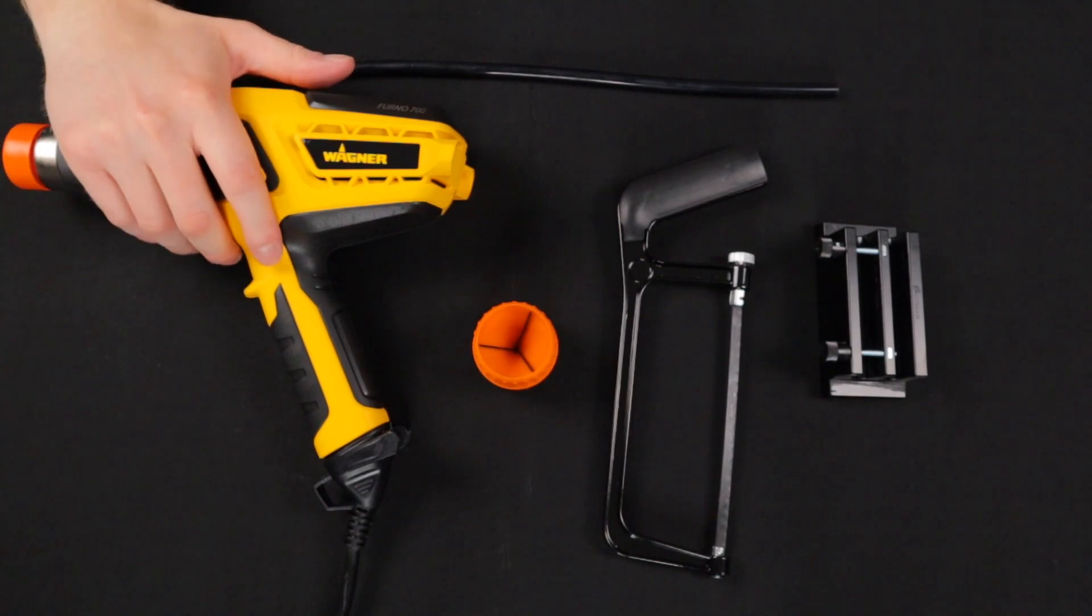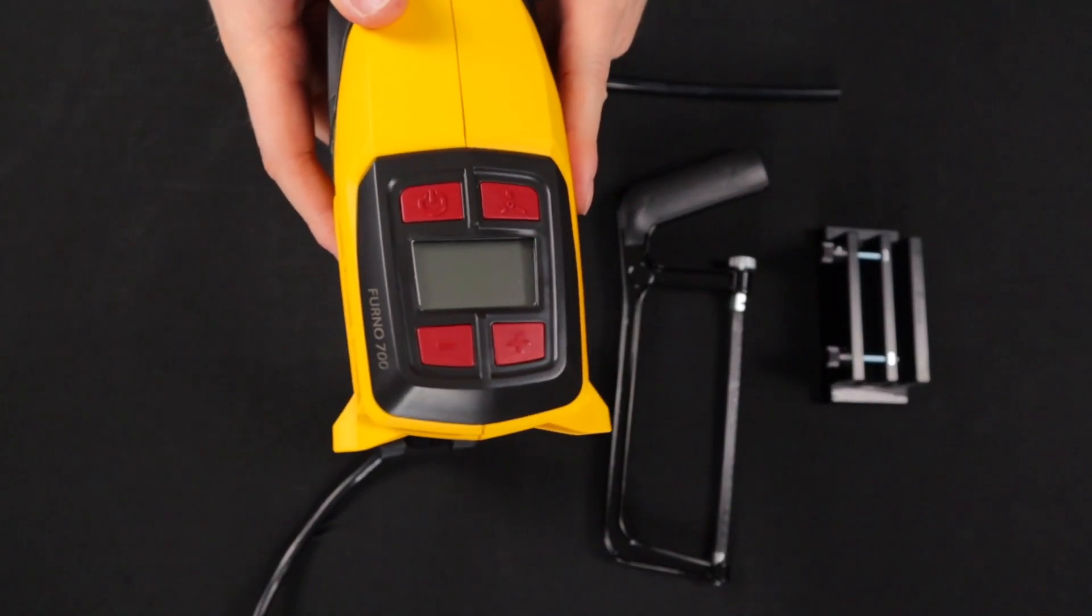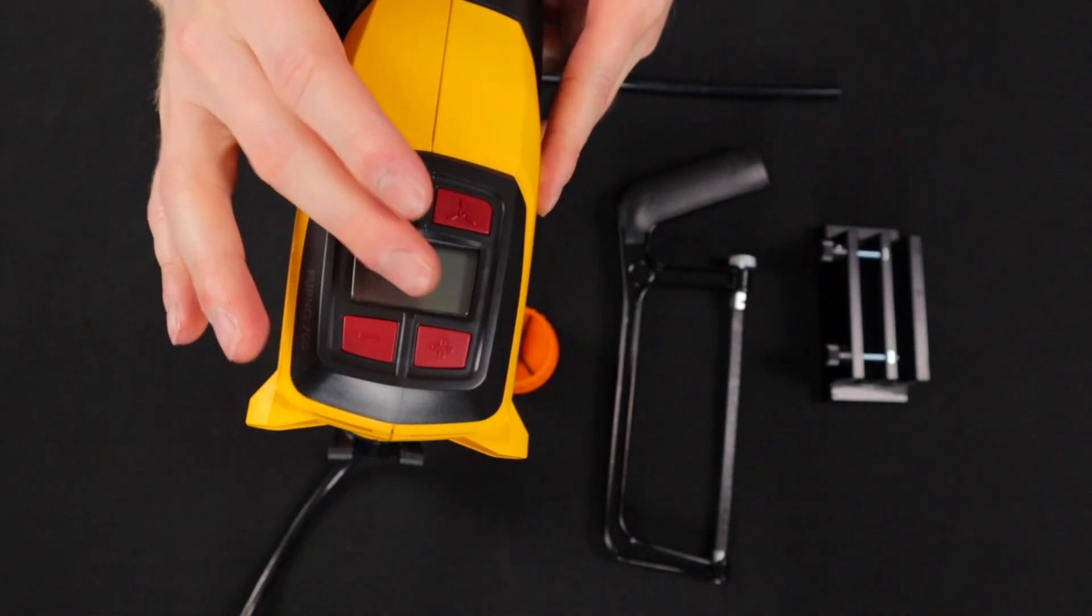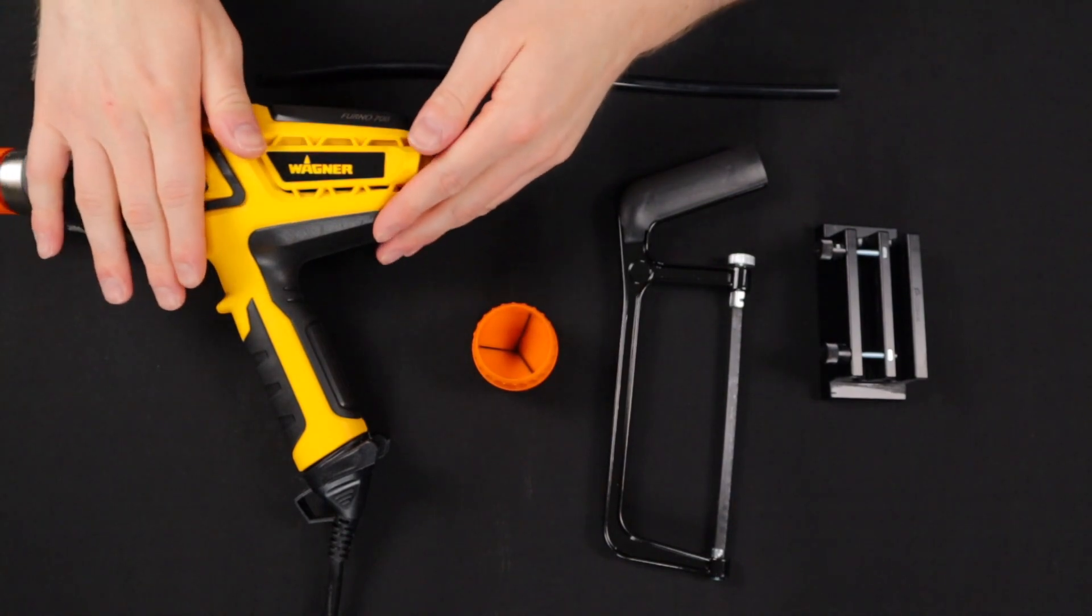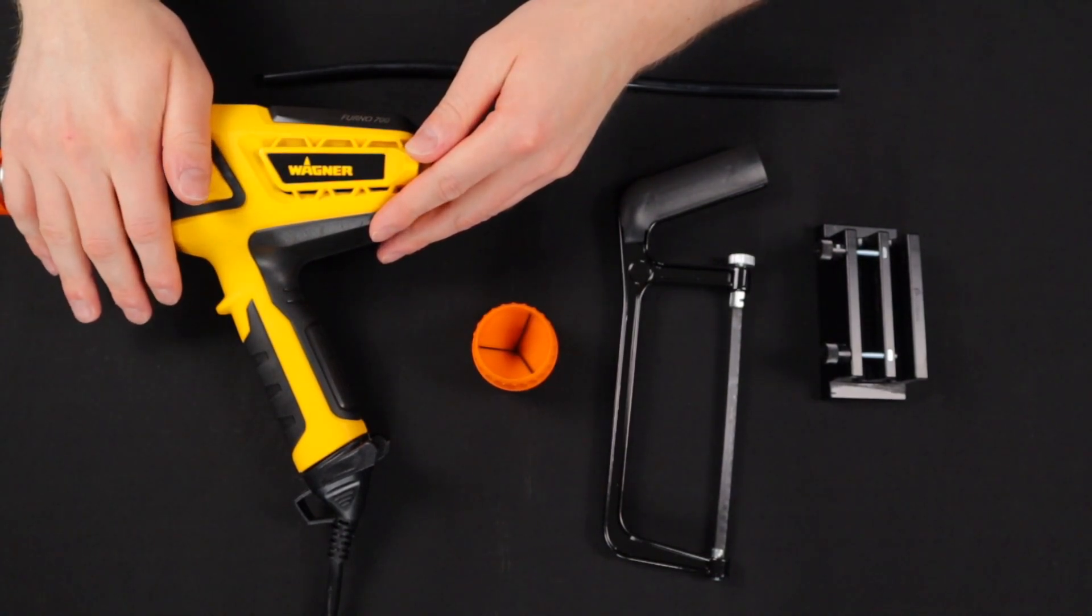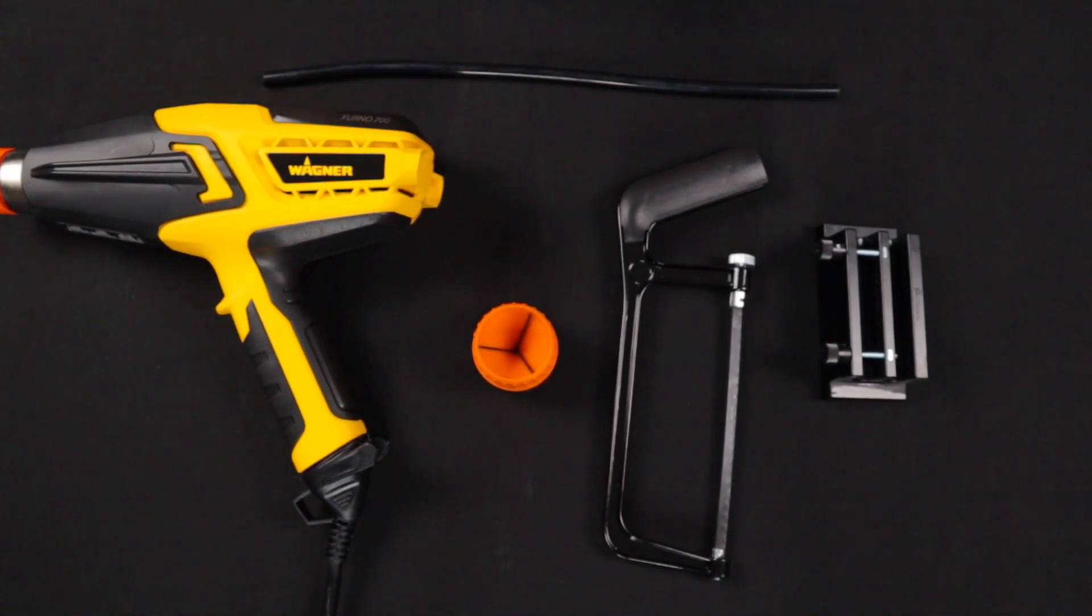Finally we have a heat gun. This particular one is a Wagner Furno 700 and it is able to select many different temperature settings as well as fan speeds which is super handy if you're going to be doing PETG or PMMA as they take separate temperatures. This gun is able to cover all of those temperature ranges.